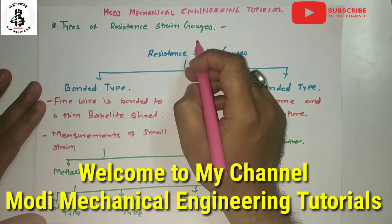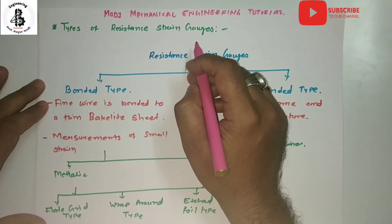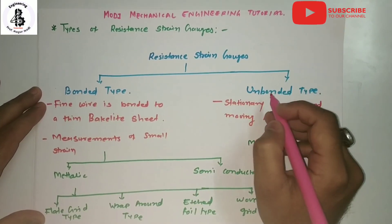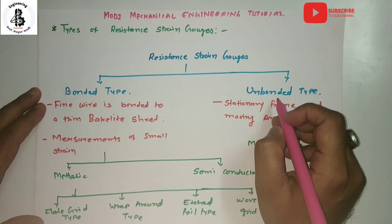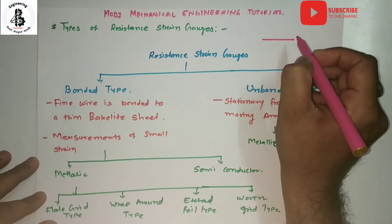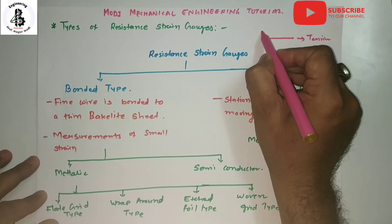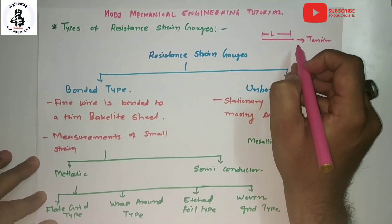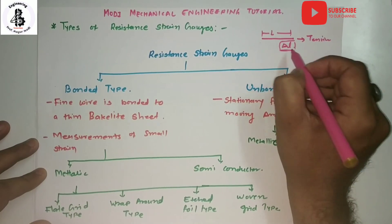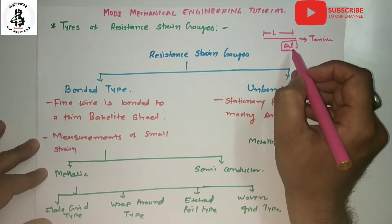Welcome to Modi Mechanical Engineering Tutorials. Today I am going to explain about the use of strain gauges and how they help to measure strain in different systems. Basically, the strain gauge is a device used for measuring the dimensional change on the surface of a structural member under test. If a tensile load is applied to a wire, there will be a change in dimension — from initial length L to a change of delta L. This video focuses on the resistance strain gauge for measuring strain in components.